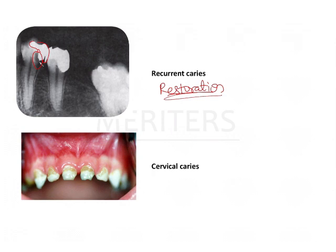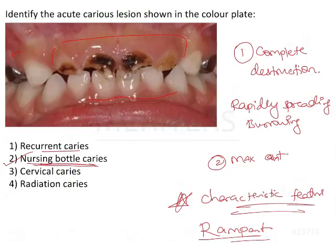Cervical caries are caries present only on the cervical areas of the teeth. Since in this image the entire tooth was involved — with only root pieces or cervical areas remaining and almost the entire tooth broken down — we know this is not cervical caries.